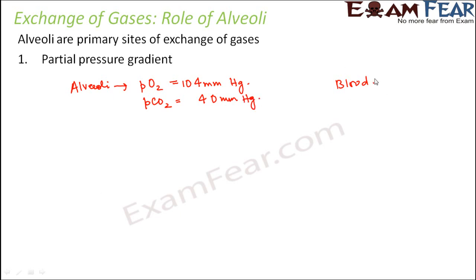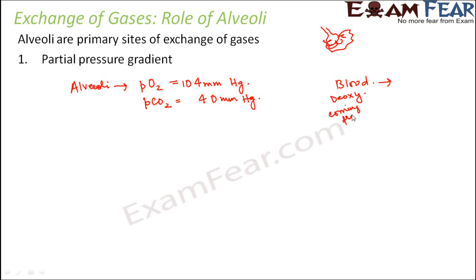Now, what is the partial pressure of oxygen and carbon dioxide in the blood? When I say blood, I am talking about the blood carried by blood vessels near the alveoli. The blood vessels near the alveoli are carrying carbon dioxide received from different tissues of the body. In this blood, the partial pressure of oxygen is 40 and the partial pressure of carbon dioxide is 45.